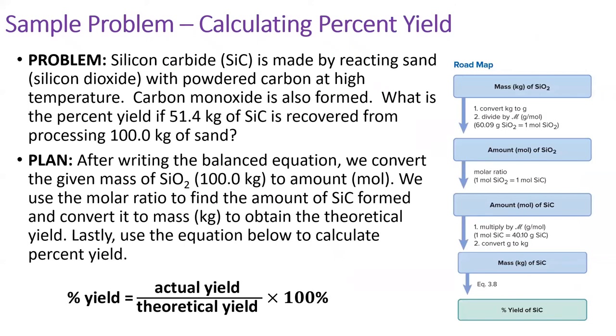In this practice problem, a chemist reacts 100 kilograms of silicon dioxide and ends up with only 54.4 kilograms of silicon carbide. I'd like you to try setting this up yourself. First,